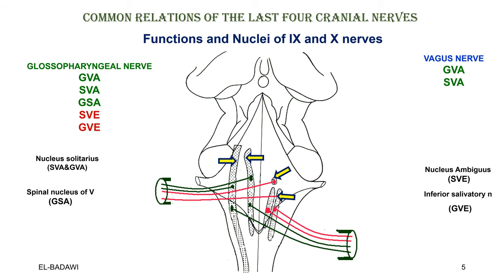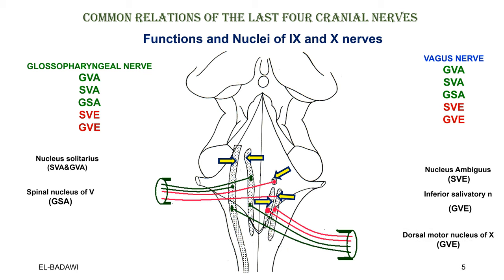The vagus has the same functions: general visceral afferent from the nucleus solitarius, special visceral afferent from the same nucleus, general somatic afferent to the spinal nucleus of the trigeminal, and special visceral efferent from the nucleus ambiguus. The only different nucleus is the general visceral efferent parasympathetic, which for the vagus comes from the dorsal motor nucleus of the vagus. These are the common functions for the vagus and the glossopharyngeal.